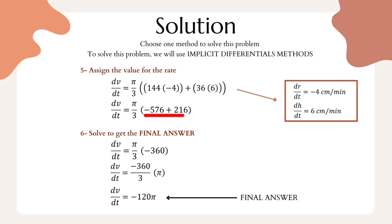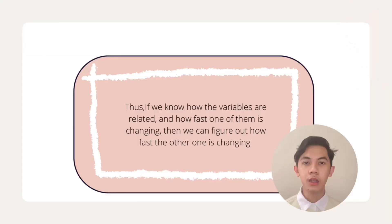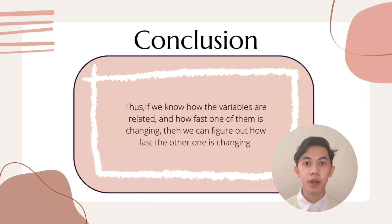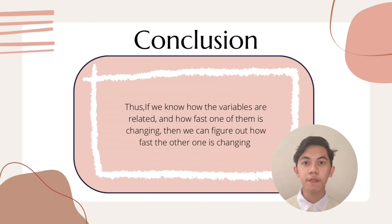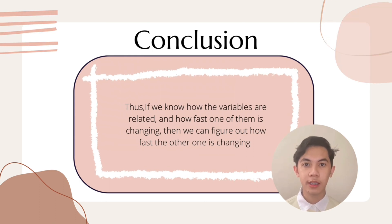We get the expression −576 + 216. After solving, we get −360, which is then divided by 3 and multiplied by π. So the final answer is −120π. Thus, if you know how the variables are related and how fast one of them is changing, then you can figure out how fast the other one is changing.